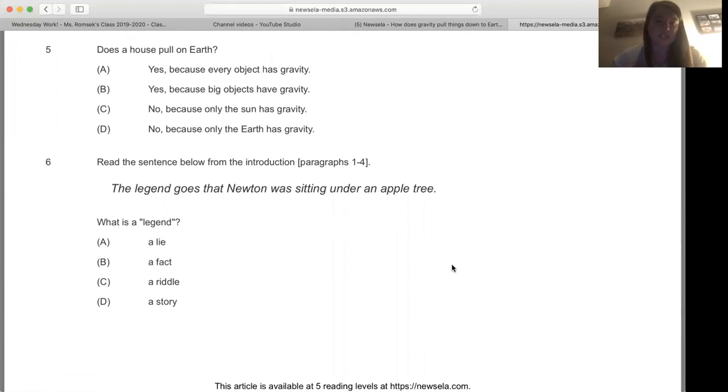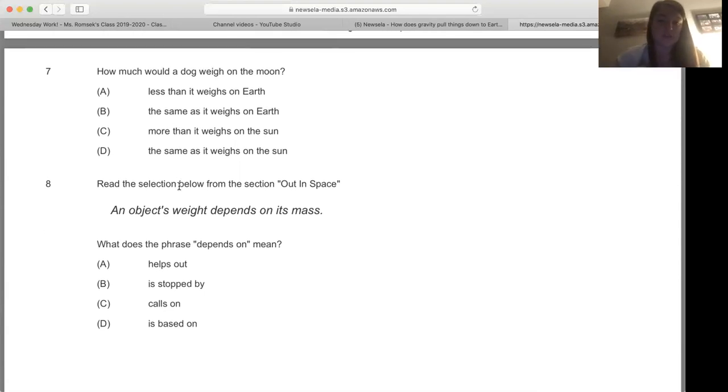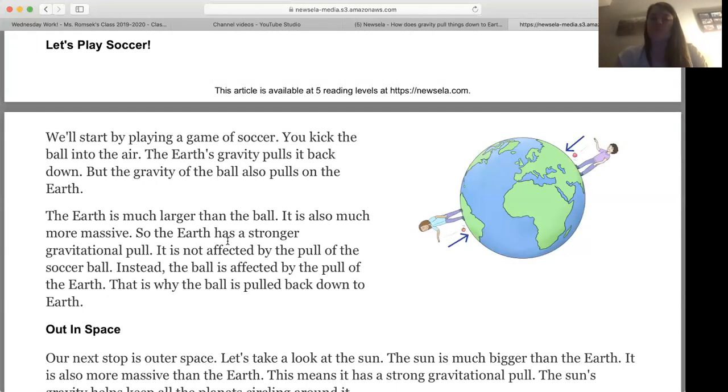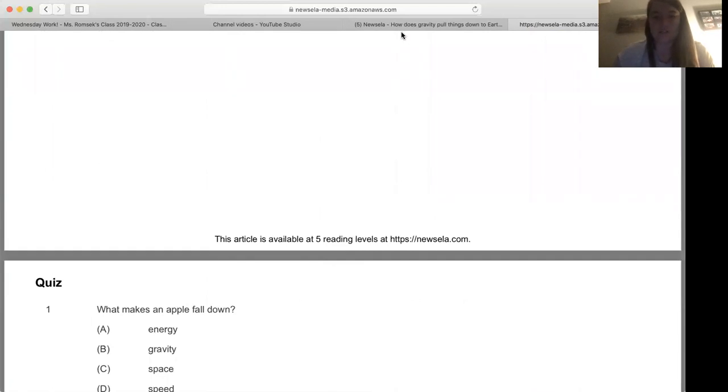And then it says read the sentence below from the introduction paragraphs one through four. The legend goes that Newton was sitting under an apple tree. What is a legend? So you need to pick that. How much would a dog weigh on the moon? So think about if you need help with that one, I would probably go back to that picture to give you a little bit of help in that section. Read the selection below from the section Out in Space: an object's weight depends on its mass. So what does the phrase depends on mean? And that's the last one. So those shouldn't be too terrible. There's a couple more like literacy-based questions in there, but then also some more sciencey ones. Alright, and that's all you need to do for science today.